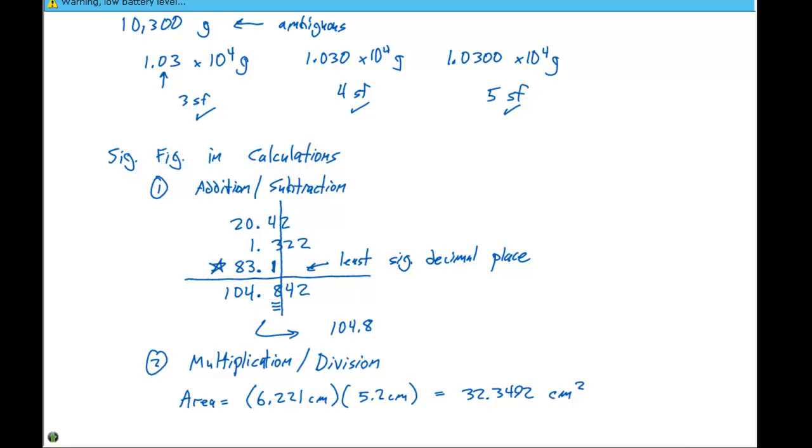We now have to look at the number of significant figures for each of the two things we're multiplying together. In this case, we have four significant figures for the first number and two significant figures for the second number. That means this 5.2 centimeters is gonna limit our final result. So this 32.3492 needs to be expressed to two significant figures, and our value that we're gonna list is 32 centimeters squared.